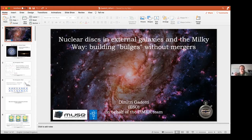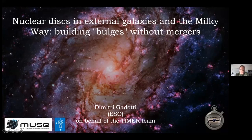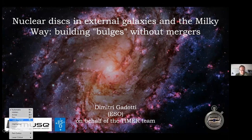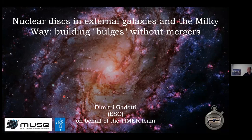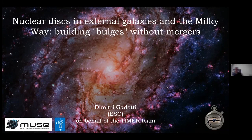It's a pleasure to be here, although only virtually. It's true I was there in 2007 or 2006. What I'm going to present today is a summary of two papers that came out last year from the TIMER collaboration. This is about the building of nuclear structures in barred galaxies, using data from the MUSE IFU spectrograph on the VLT. I'm also going to put these results in the context of the Milky Way.